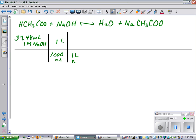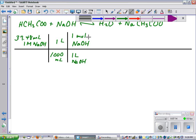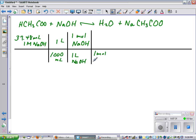So in 1 liter of NaOH, there's 1 mole of NaOH. And now that I'm in moles, this equation is balanced again with all 1s, but it's still balanced. So 1 mole of NaOH will neutralize 1 mole of acetic acid.